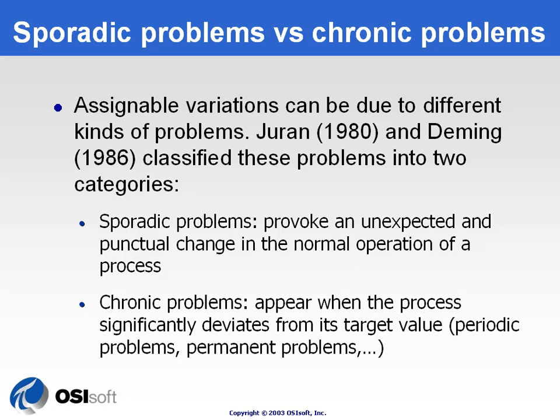The intermittent fluctuations we talked about earlier have been classified into two types by Juran and Deming. First, sporadic problems — occurring just once, due to a change or a break in the process. You will see them, they will be abnormal, but they will never happen again. The other type is chronic problems, which drag your production down on a daily basis. You want to work on and solve them because they are recurrent.